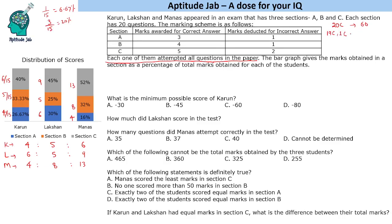In Section A, if you get all 20 correct, your score is 60. If you get 19 correct and 1 incorrect, that gives 57 minus 1 = 56. For 18 correct and 2 incorrect: 54 minus 2 = 52. So when one answer changes from correct to incorrect, you lose 3 marks and gain a minus 1, a difference of 4. So Section A scores follow: 60, 56, 52, 48, ... down to minus 20 (all incorrect).